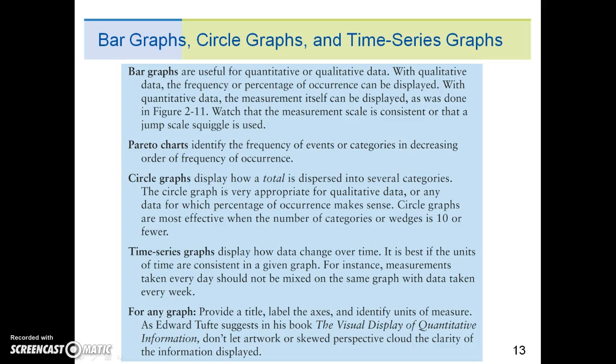Circle graphs display how a total is dispersed into several categories. The circle graph is very appropriate for qualitative data or any data for which percentage of occurrence makes sense. Circle graphs are most effective when the number of categories or wedges is 10 or fewer.